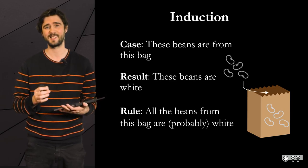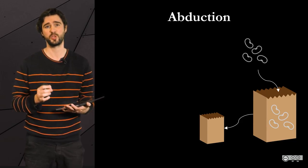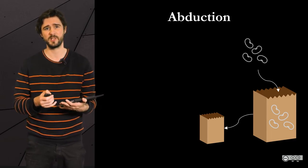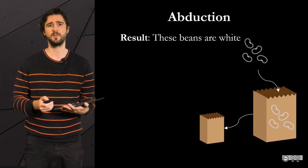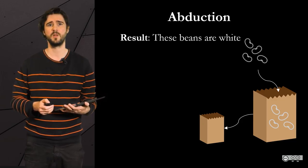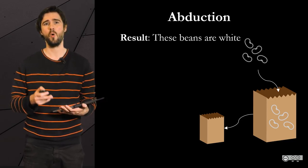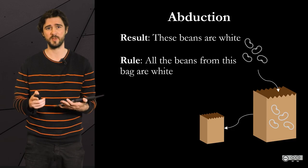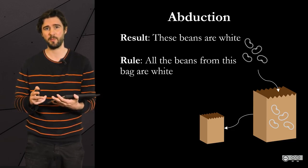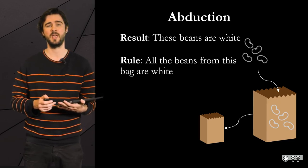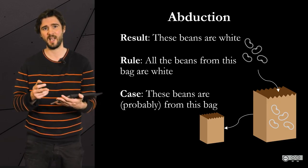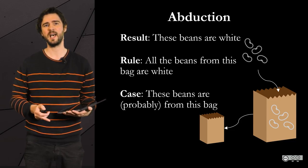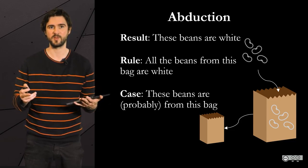It is also the case with the last inference we will talk about — abduction — the formulation of a hypothesis. In the case of abduction, you start with the result: the beans I found, for instance on the floor, are white. The second premise is a rule: all the beans from this bag are white. And the conclusion of the argument is a hypothesis — because abduction is about formulating a hypothesis. In this case, the hypothesis is: the beans I found on the floor are probably from this bag. I insist again on the word probably, because they could be from another bag as well, for all you know.